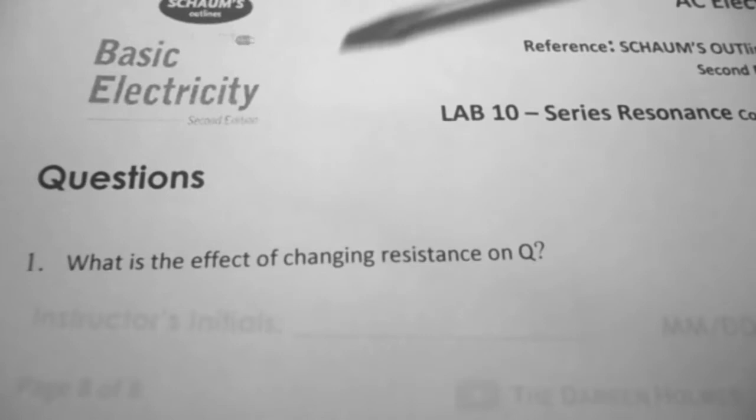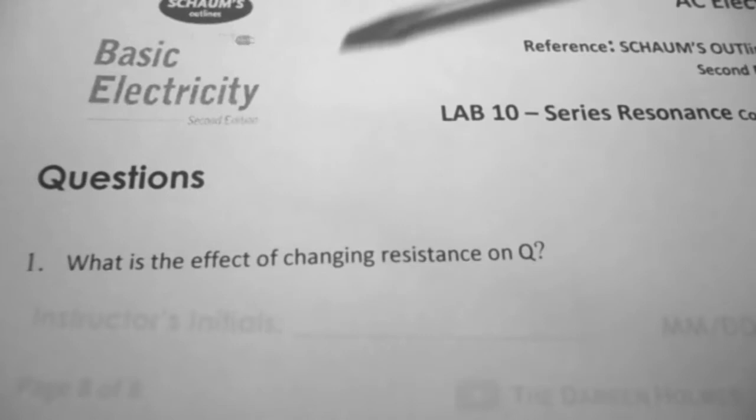On the last page of the lab, there are three questions to answer based on your calculations, observations, and conclusions. When you've completed your lab, show it to your instructor so they can initial it to indicate that it is complete.